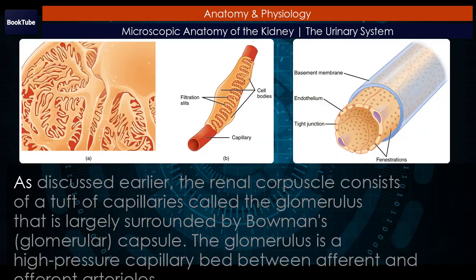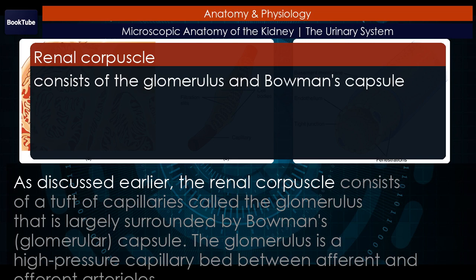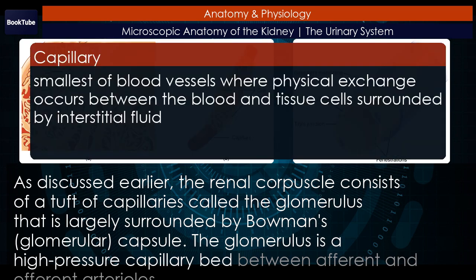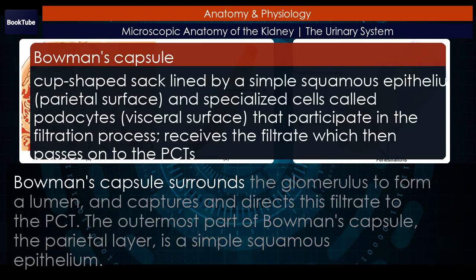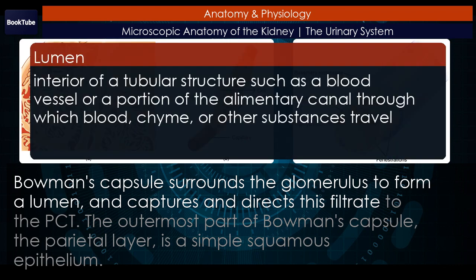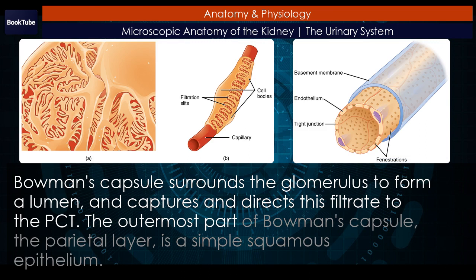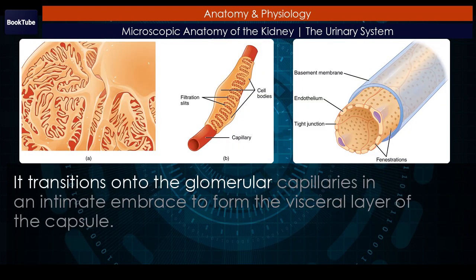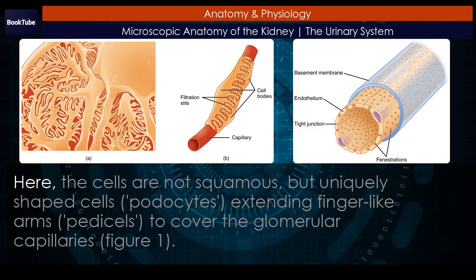Renal corpuscle. As discussed earlier, the renal corpuscle consists of a tuft of capillaries called the glomerulus, largely surrounded by Bowman's capsule. The glomerulus is a high-pressure capillary bed between afferent and efferent arterioles. Bowman's capsule surrounds the glomerulus to form a lumen and captures and directs this filtrate to the PCT. The outermost part of Bowman's capsule, the parietal layer, is a simple squamous epithelium. It transitions onto the glomerular capillaries in an intimate embrace to form the visceral layer of the capsule. Here, the cells are not squamous, but uniquely shaped cells.